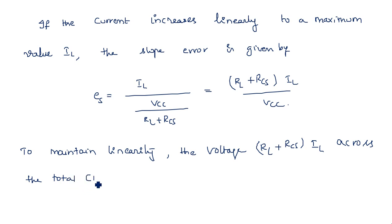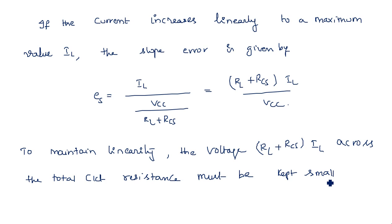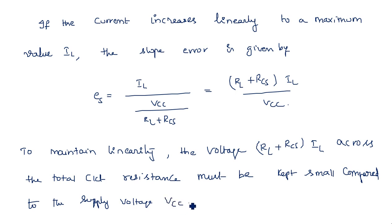The voltage across the total circuit resistance must be kept small compared to the supply voltage VCC. This is always our aim — to maintain linearity — and all these circuit modifications are done to achieve that.